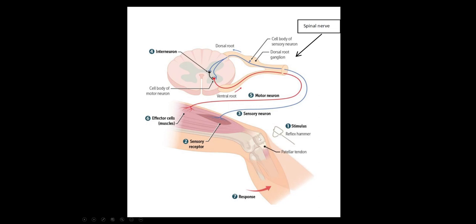Radiculopathies and plexopathies are all lower motor neuron — from the anterior horn cell all the way out to the muscle. Whether it's a radiculopathy or a plexopathy, it's going to interfere with the reflex loop. If this is an L2, L3, or L4 radiculopathy, or a lumbar plexopathy, then the patella reflex is going to be absent. We could also have other lower motor neuron findings over time, such as atrophy of the quadriceps muscle.